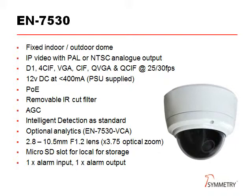The EN 7530 is a fixed dome camera that can be used indoors or outdoors. It has an analog output and the same range of resolutions as before. A power supply is provided, although it is also compatible with PoE. Day-night operation and automatic gain control makes it ideal in varying light levels. Intelligent detection is standard, with analytics available on the VCA version. The zoom range is times 3.75, and one alarm input and output increases its flexibility.